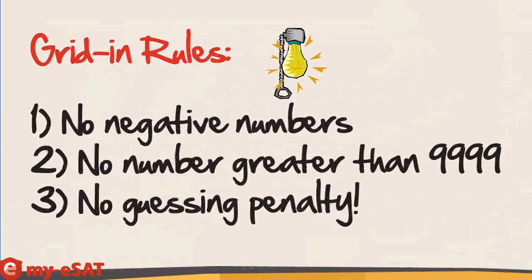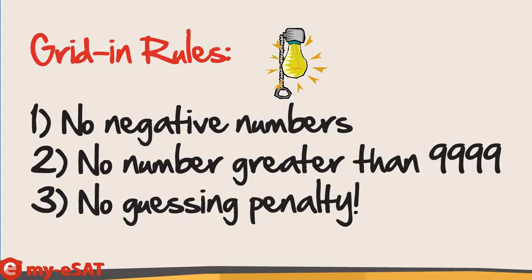Okay, because grid-ins are such a special beast, there are also special grid-in rules. A grid-in can never be a negative number, or a number greater than 9999. Think about it. That's because there is no way to fill those numbers in.